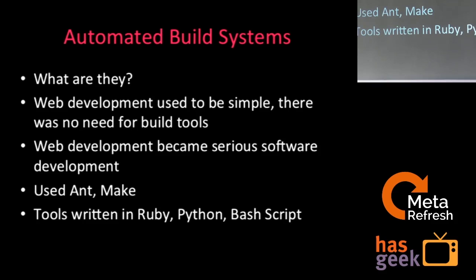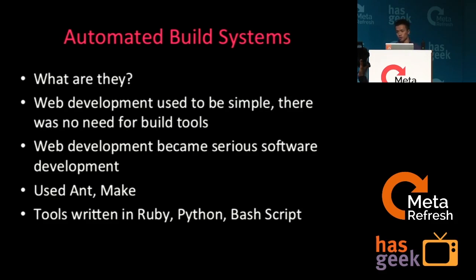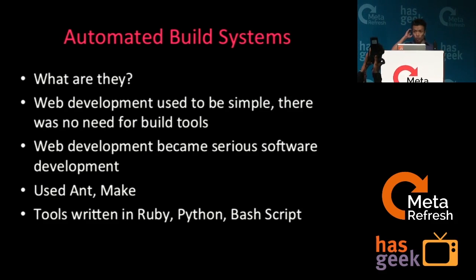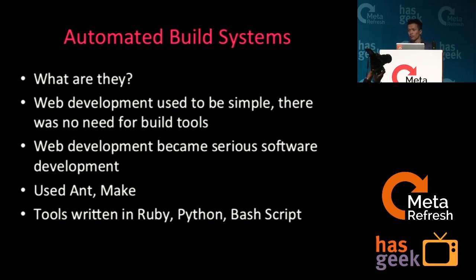Probably most of you are familiar with them, maybe a few are not yet. Automated build systems are software systems which do the tedious and repetitive tasks for you to create a version of software which can be distributed and put on a production server. A long time ago — well, in internet years, let's say maybe 10 years ago — web development used to be very simple. There was no need for a build system. As the web and the web development industry grew, there were needs for a build system for web developers as well.